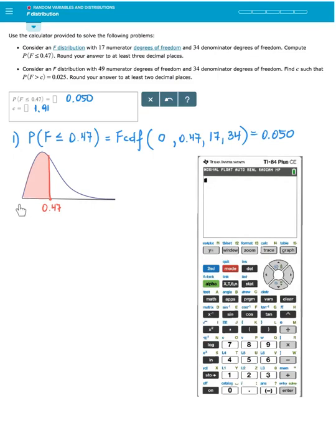Let's read the first part. Consider an f-distribution with 17 numerator degrees of freedom and 34 denominator degrees of freedom. Compute probability that f is less than or equal to 0.47. Round your answer to at least three decimal places.